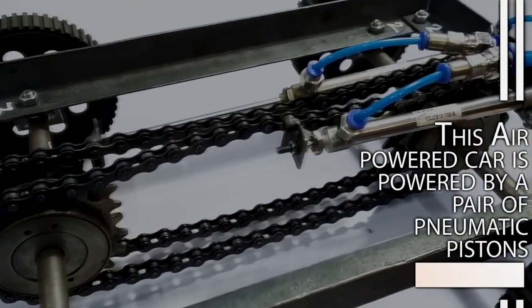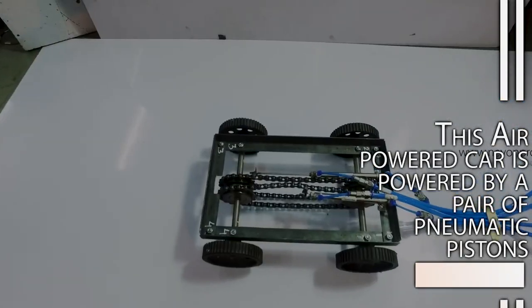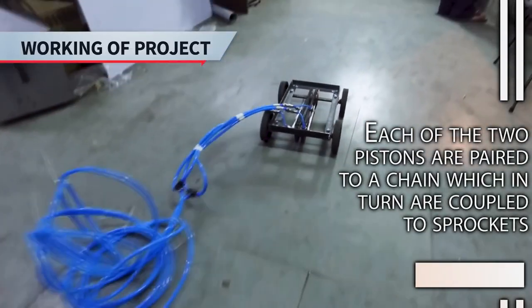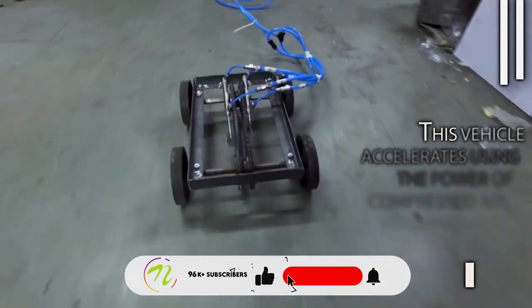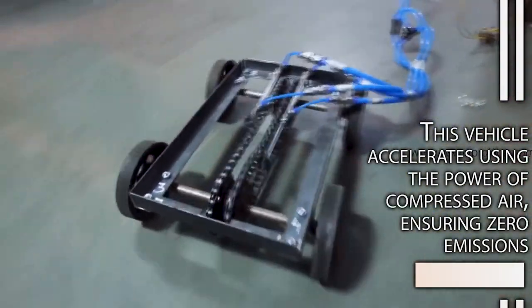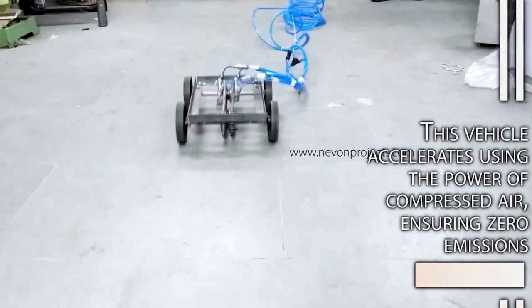This air powered car is powered by a pair of pneumatic pistons. Each of the two pistons are connected to the chain which in turn are coupled to sprockets. This vehicle accelerates using the power of compressed air ensuring zero emission.